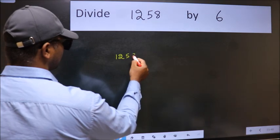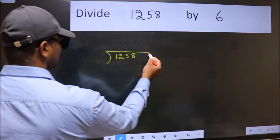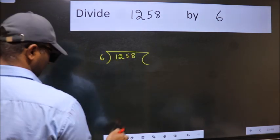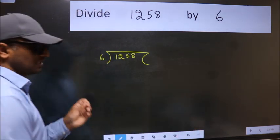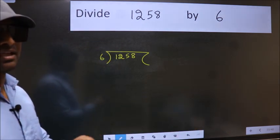1,258 here, 6 here. This is your step 1.